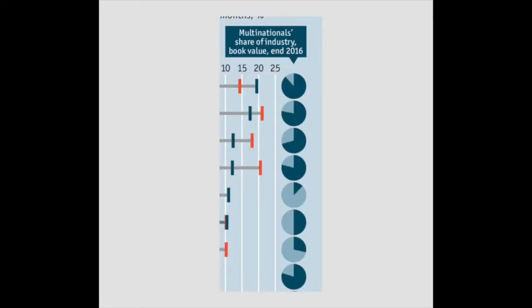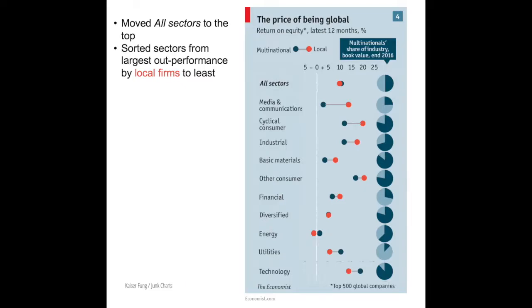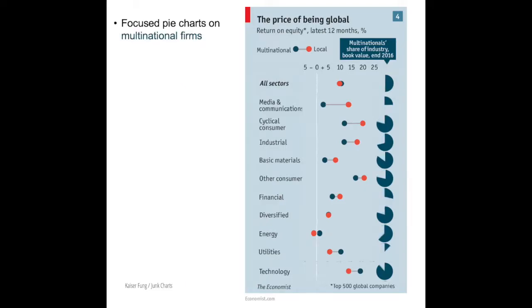The pie charts on the right side are still hard to understand. It's another case of dashed expectations. Given the red dots and the blue dots in the main part of the chart, readers are expecting to see red and blue sectors in the pie charts. But the pie charts only show the blue multinational sectors. It shows a light blue sector for others, which is not explained and is also not necessary. So I took those light blue sectors out.